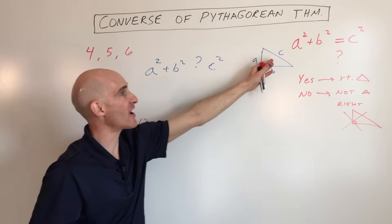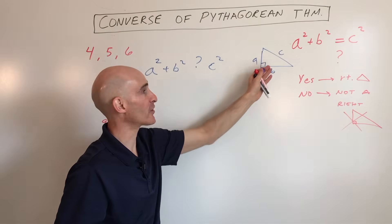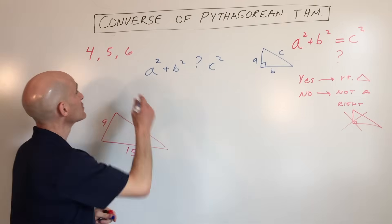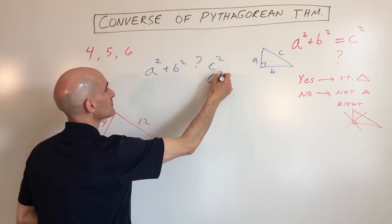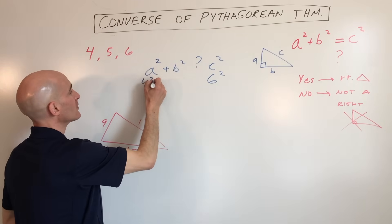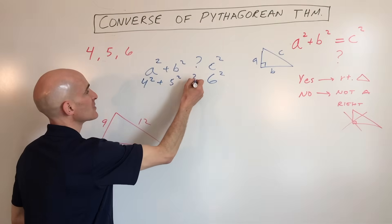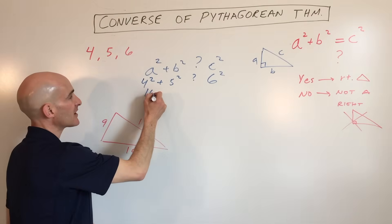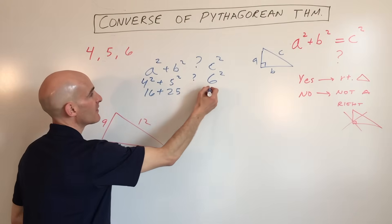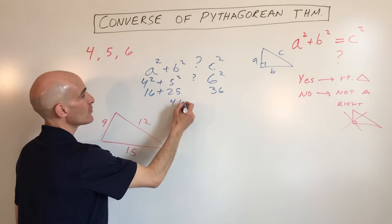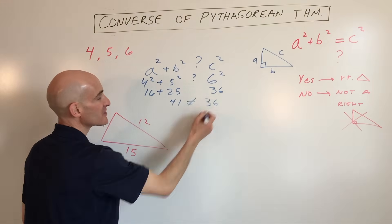Okay, that's the longest side in a triangle, the one across from the right angle, the hypotenuse. So in this case, we're going to put 6 here. We're going to put 4 here. We're going to put 5 here. I'm just going to leave a question mark. And let's simplify. We've got 16 plus 25, 36. This is 41, which does not equal 36.